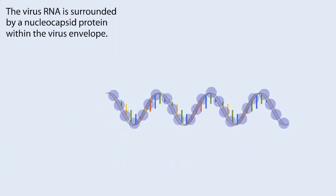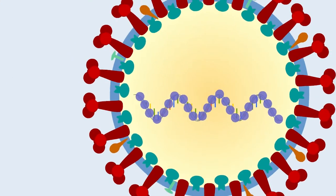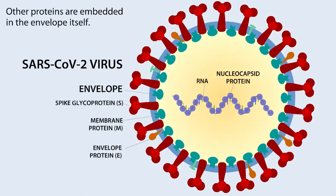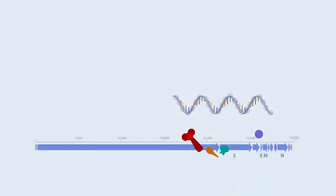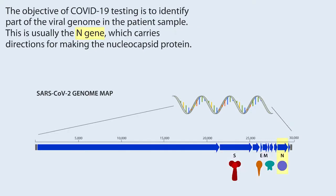The virus RNA is surrounded by a nucleocapsid protein within the virus envelope. Other proteins are embedded in the envelope itself. The SARS-CoV-2 genome contains genes that carry the directions for making these and other proteins needed to replicate the virus inside the human cell. The objective of COVID-19 testing is to identify part of the viral genome in the patient sample — usually the N-gene, which carries directions for making the nucleocapsid protein.